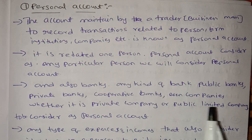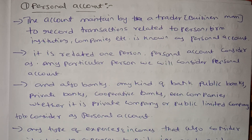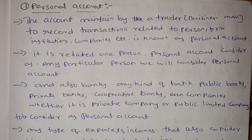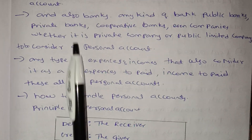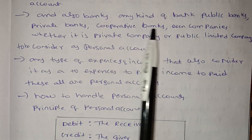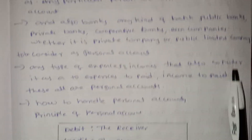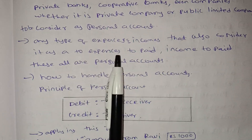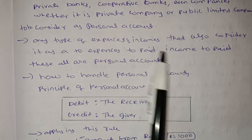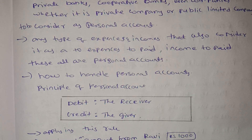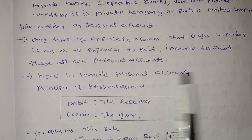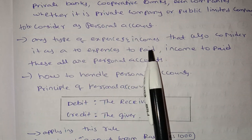Whether it is a private company or a public limited company, it is considered a personal account. Banks of any kind — public bank, private bank — are also considered personal accounts. Any type of expenses or income can also be considered under personal accounts. If you have an expense or income, it can fall under a personal account.